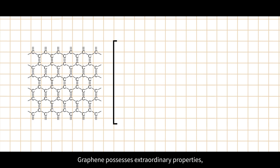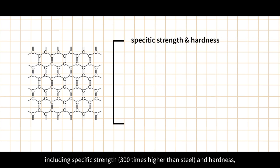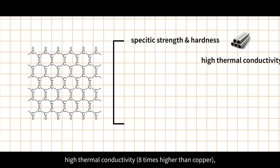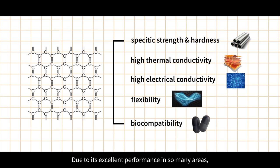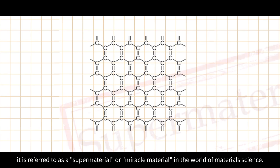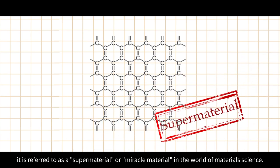In other words, graphene is a building block for all graphitic materials. Graphene possesses extraordinary properties including specific strength and hardness, high thermal conductivity, high electrical conductivity, excellent flexibility, and biocompatibility.